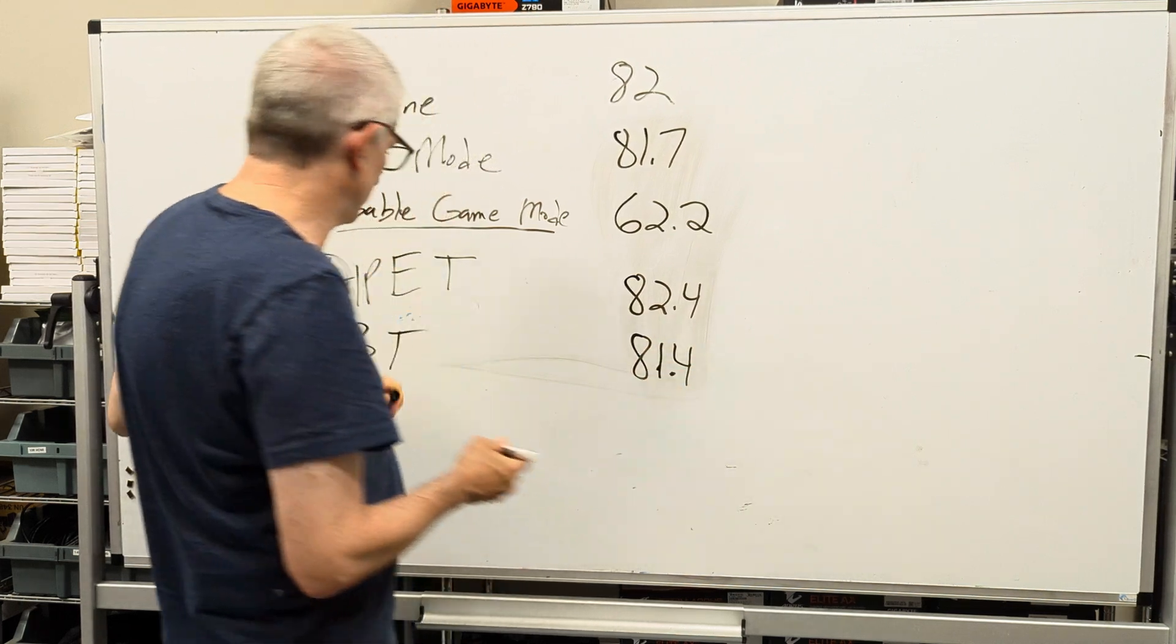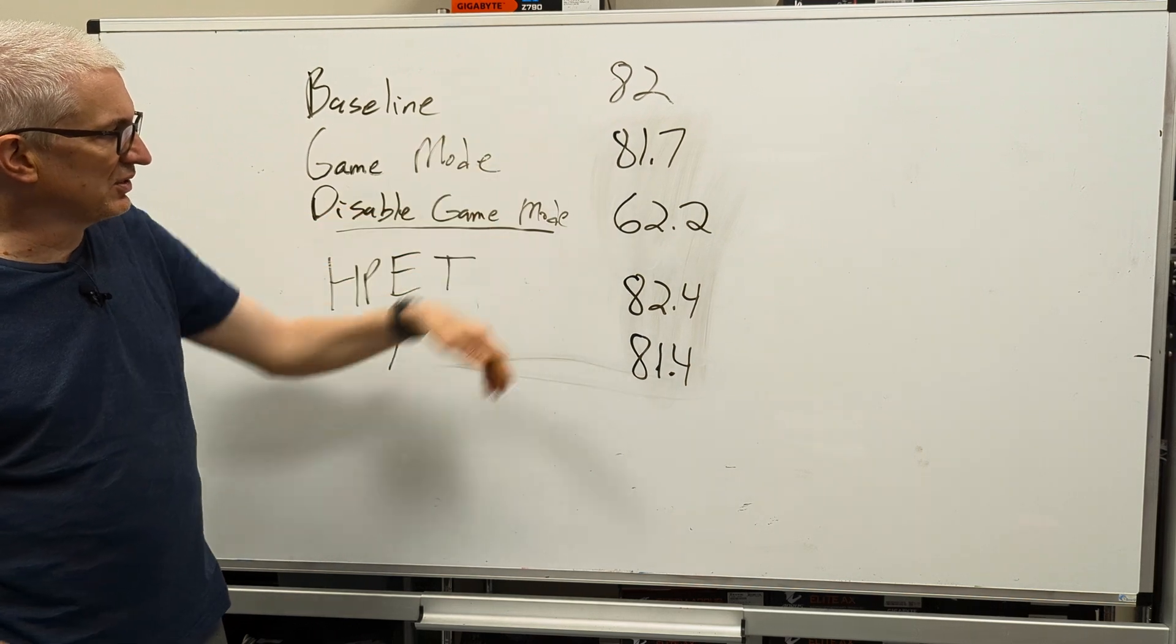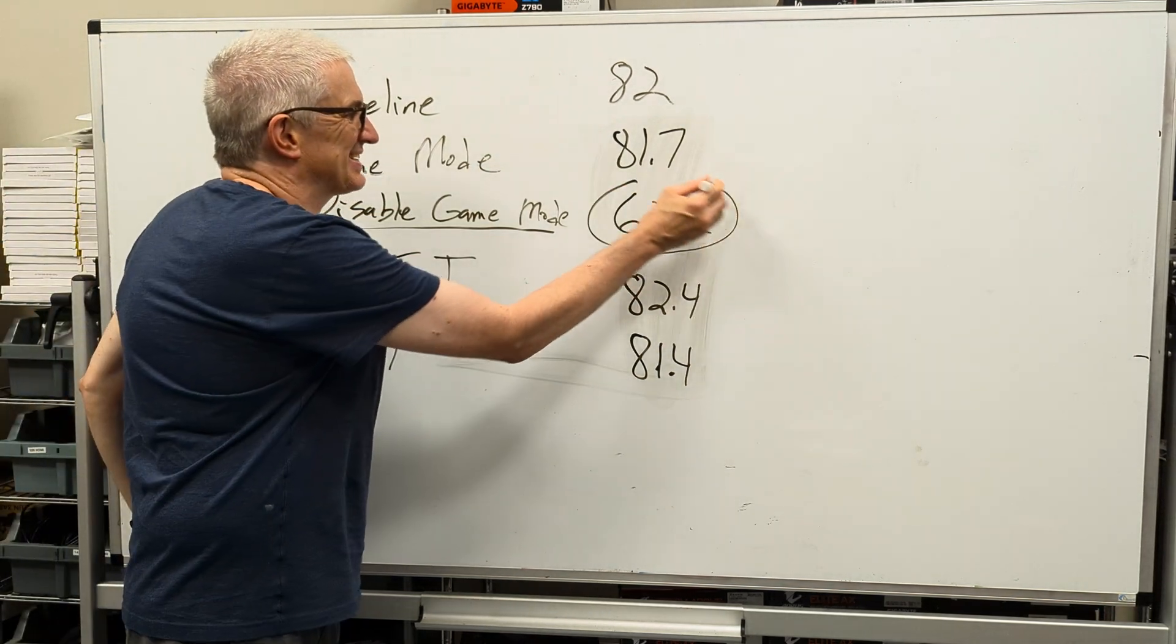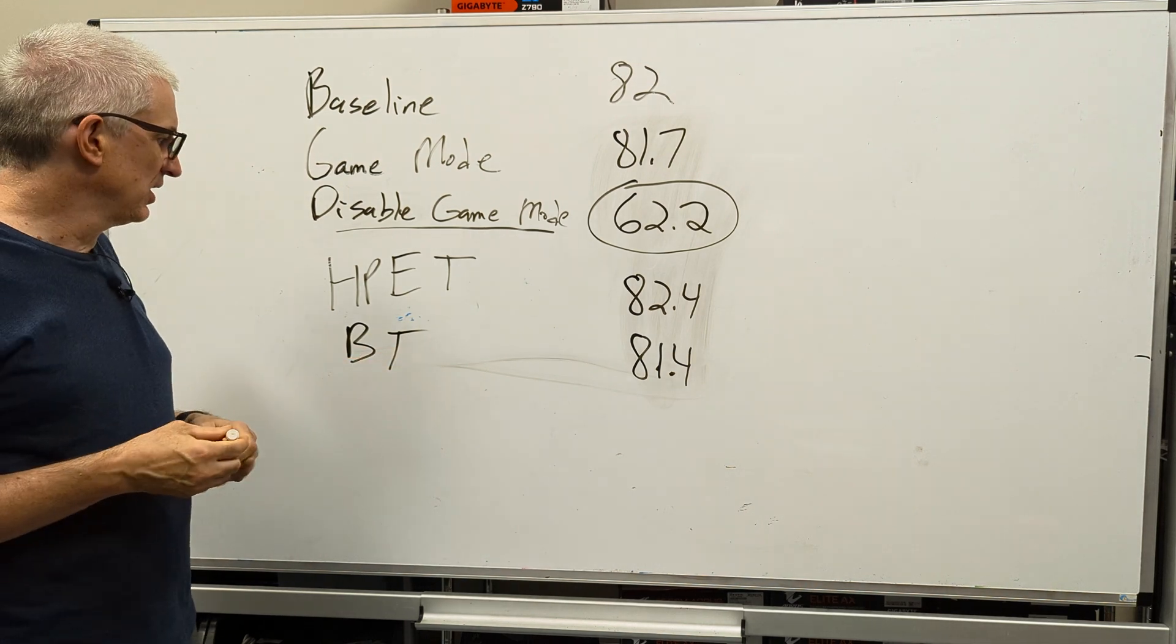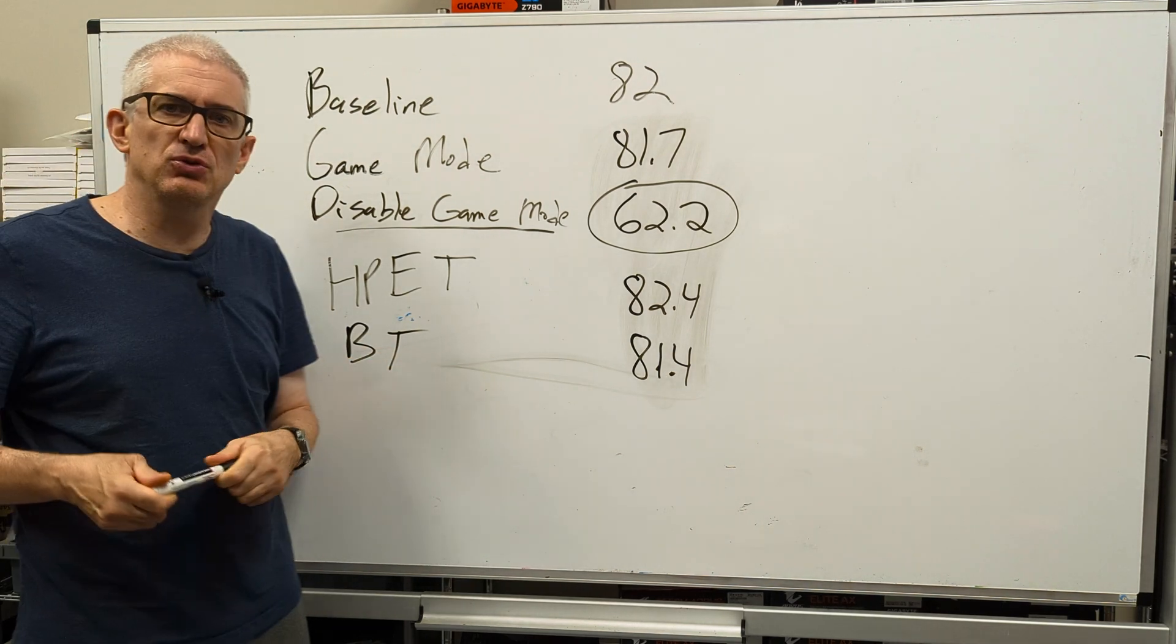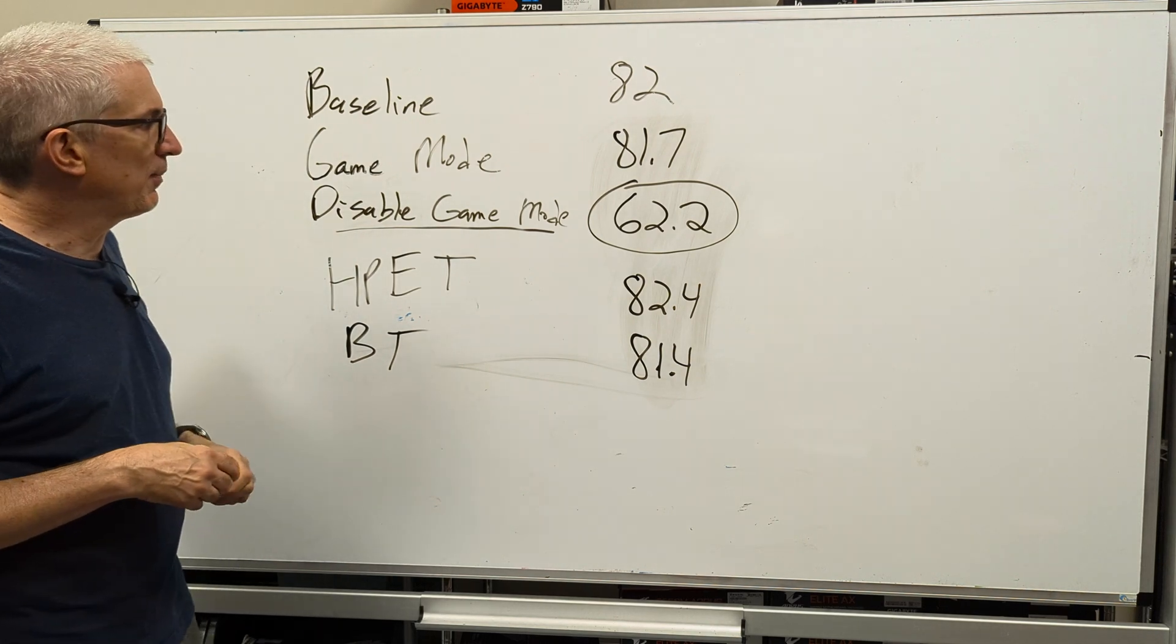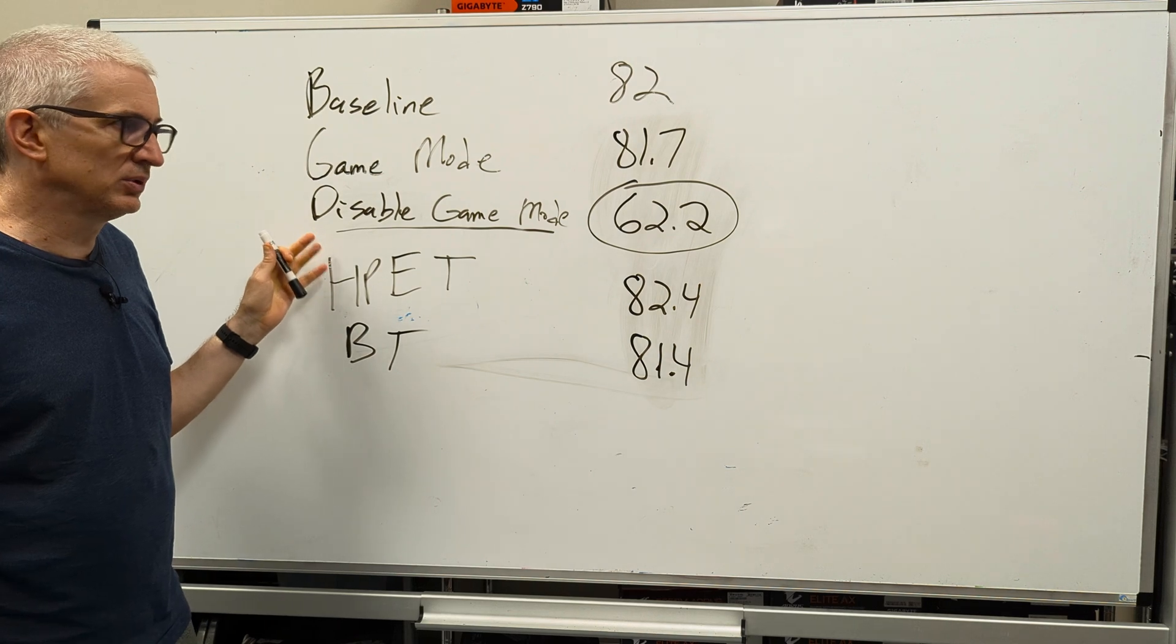Can't write all of a sudden. 81.4. Again, not statistically significant. The only one that's statistically significant is this one. The rest are just run-to-run variance. So yeah, shocker, shocker, disabling Bluetooth in the device manager made no difference. So what do we take away from this? Leave everything alone.